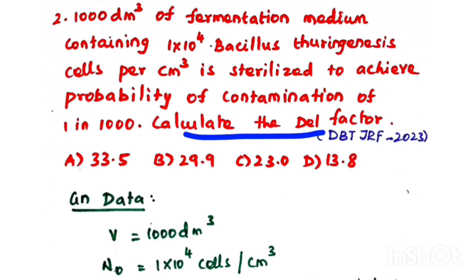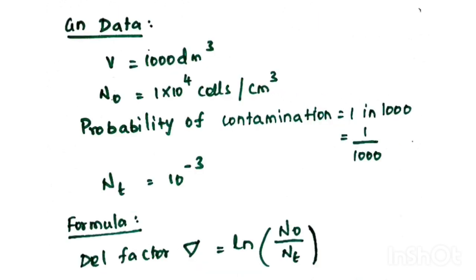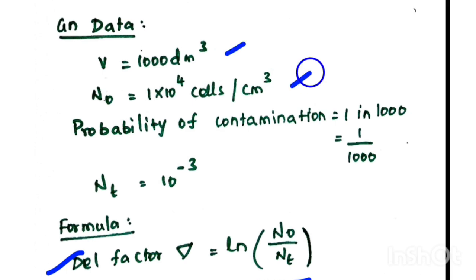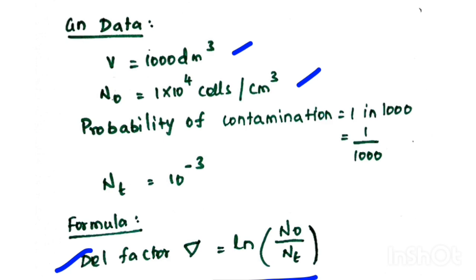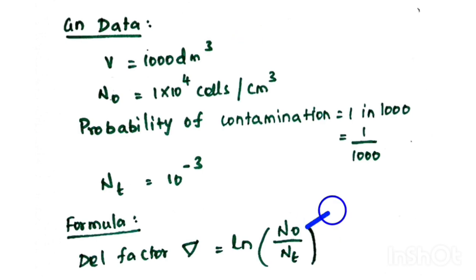We know the formula: del = ln(N0 / Nt). However, N0 is not the total number of cells directly — it is given as 1×10^4 cells per cm³. So first we need to calculate the total number of cells present in the 1000 dm³ volume of medium before substituting into the equation.